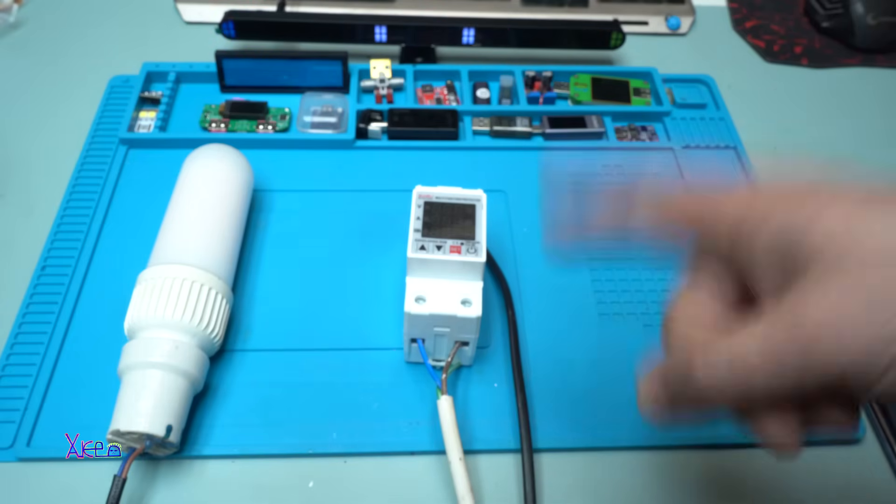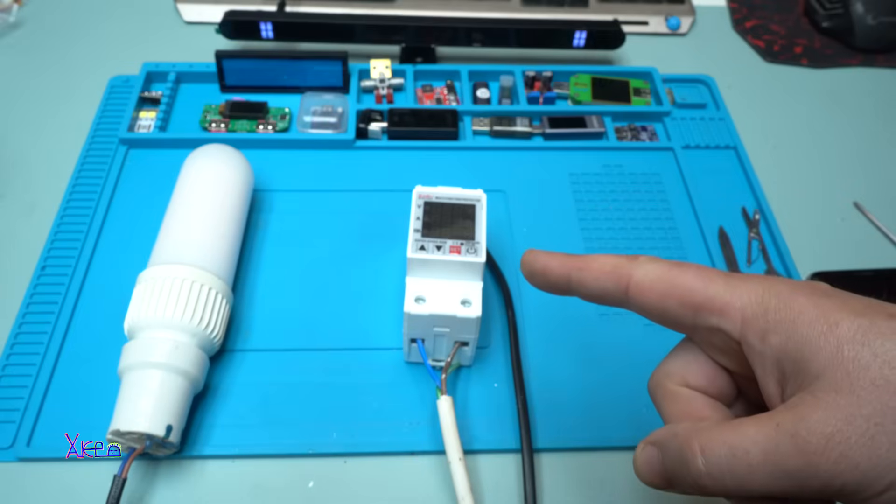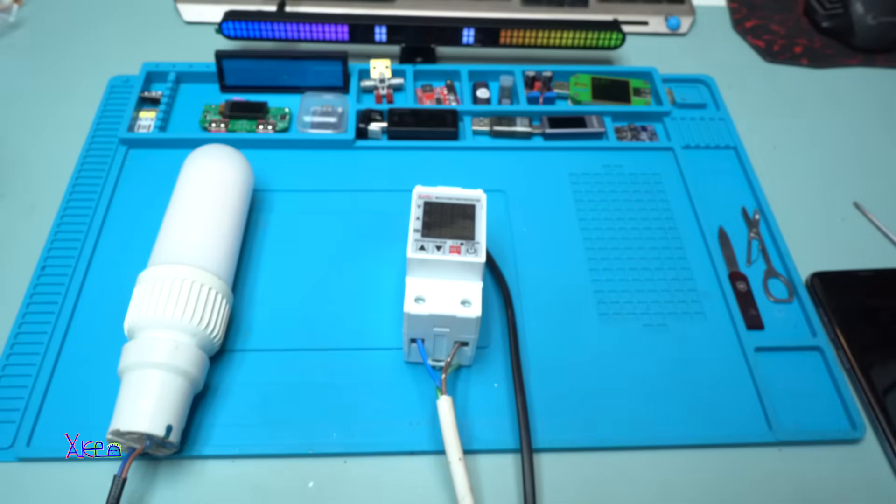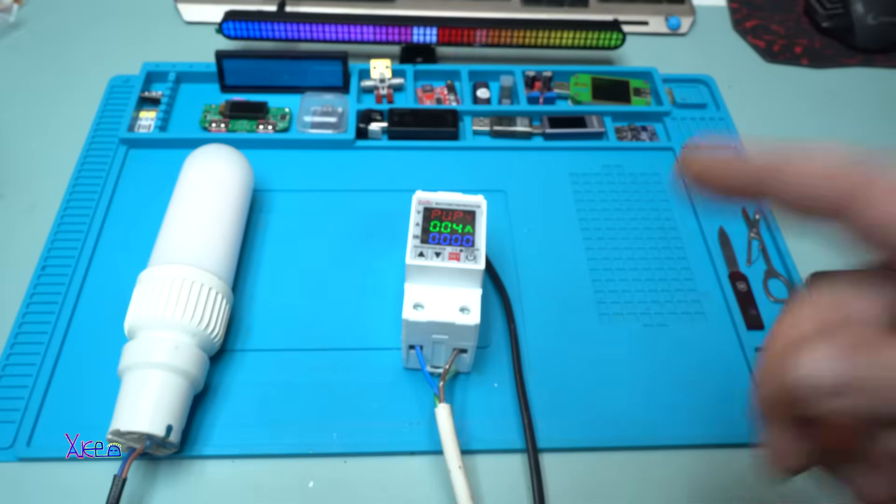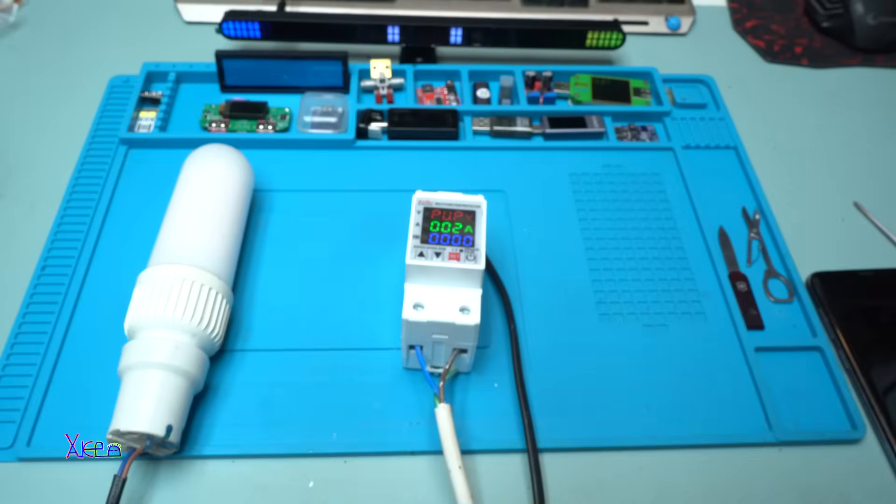Power on delay time. That can be set from 1 second to 600 seconds. Take a look. 8 seconds is the delay time. After 8 seconds the bulb will be turned on. Beautiful.